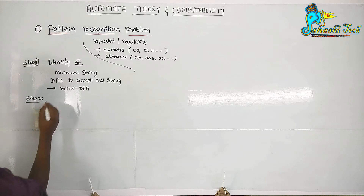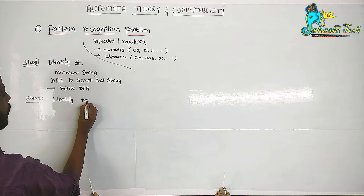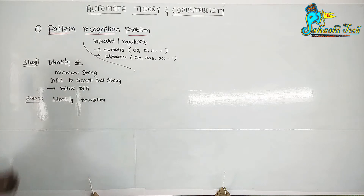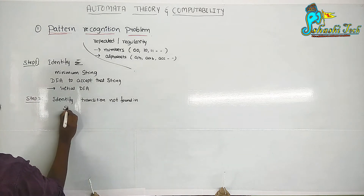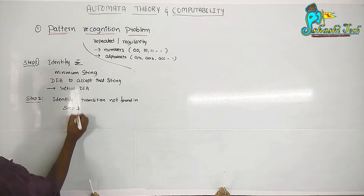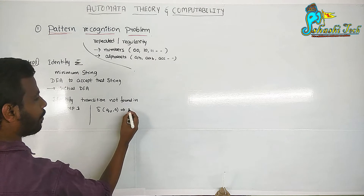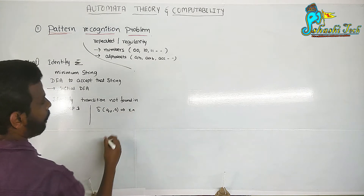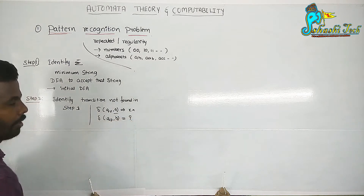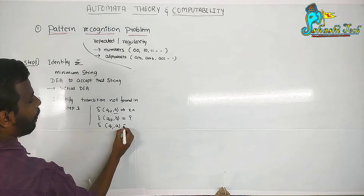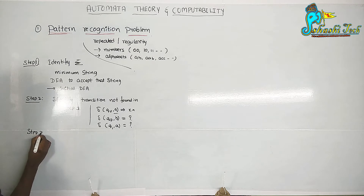Step two says: identify the transition not found in step one. For example, consider delta of Q0 upon accepting A reaches some state X. We found the transition for A. But we also need to find delta upon accepting B — where does it go? Similarly, delta of Q1 upon accepting A — where does it reach? We need to find these missing transitions.